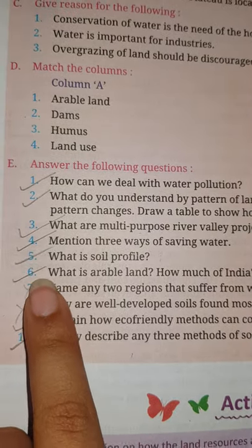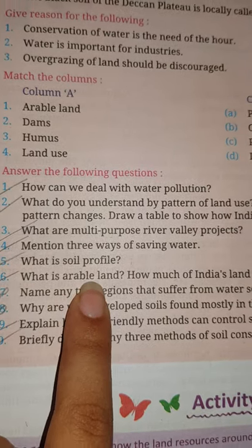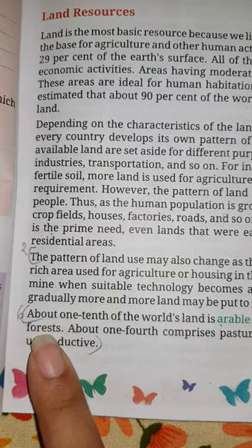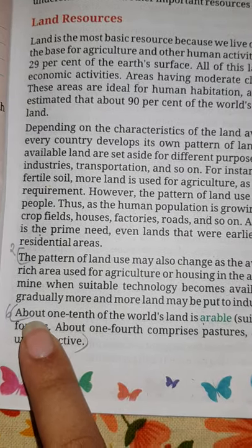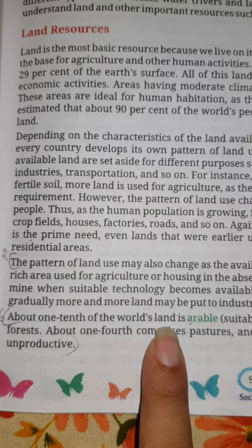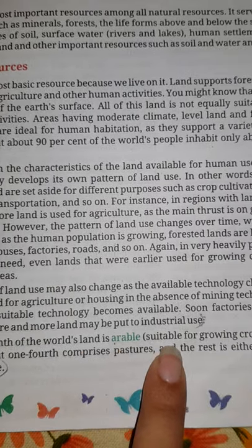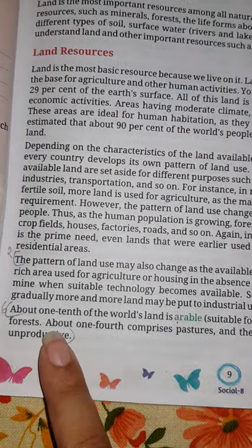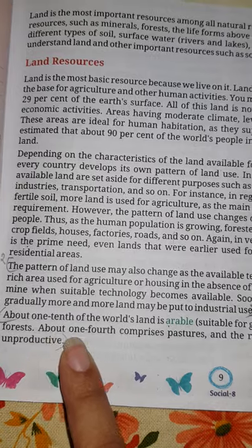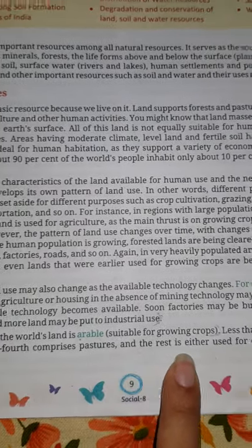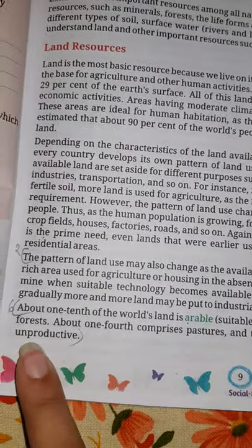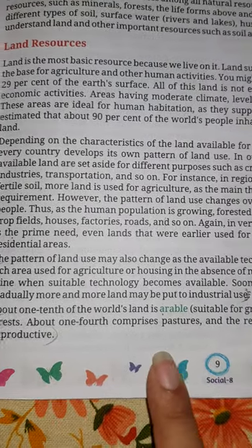Now see question number 6: What is arable land? How much of India's land is arable? Your answer is: about one third of India's land is arable land, which is suitable for growing crops. Less than one third is under forest. About one fourth is comprised of pastures and the rest is either used for other purposes or is unproductive.